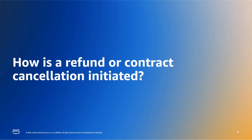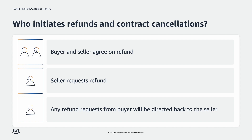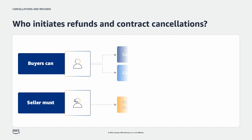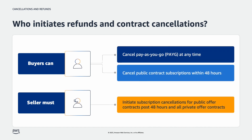How is a refund or cancellation initiated? Charges for AWS Marketplace subscriptions are paid to the seller of the product, and refunds must be requested from the seller directly. The buyer and the seller must come to an agreement regarding a refund, and then the seller can request the refund. If a buyer requests a refund and/or contract cancellation directly from AWS, customer service will instruct them to contact the seller using the seller's posted support contact information for the product in question. Note that AWS Marketplace refunds are at the seller's discretion and AWS will not supersede this decision. Buyers can cancel subscriptions to pay-as-you-go products at any time and public contract subscriptions within 48 hours without reaching out to the seller.